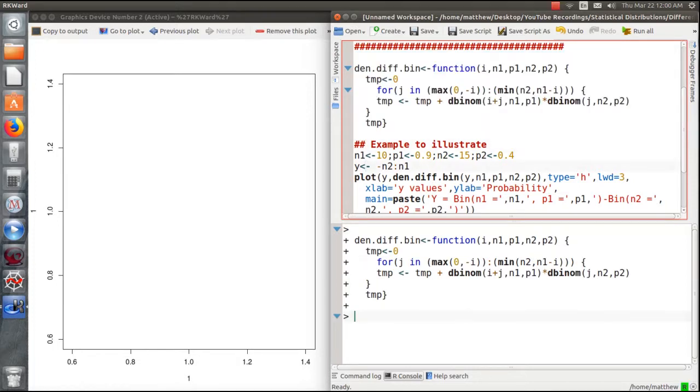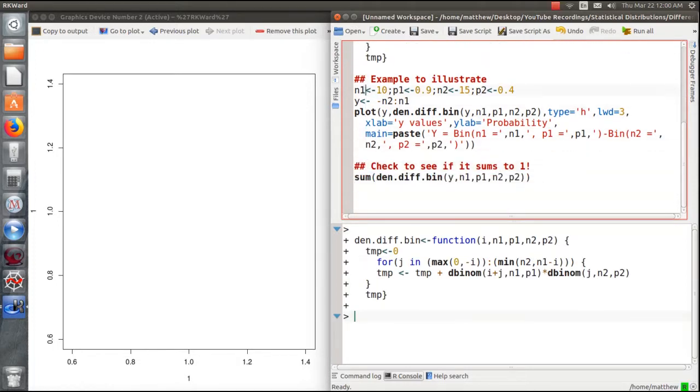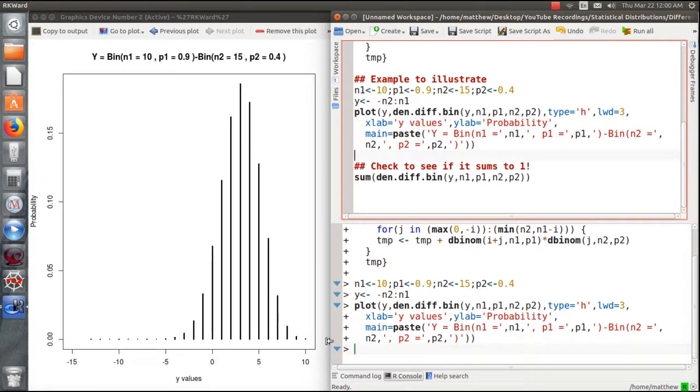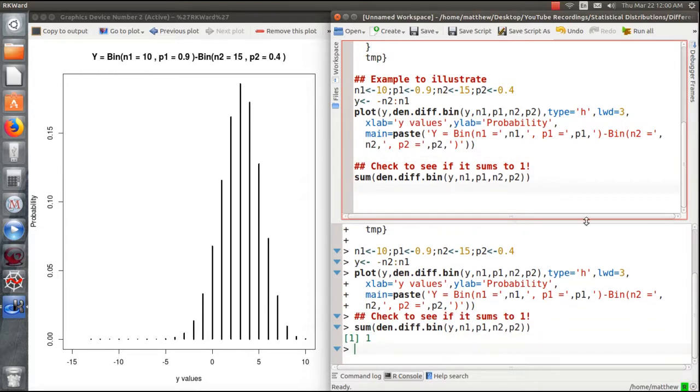And now let's look at some specific examples. We're going to look at several. Here we're going to let a sample size of 10 and 15. The proportion P1 and P2 is 0.9 and 0.4. And then we're going to plot it. And there, here's the density of Y of X1 minus X2. And let's check to see it sums to one. And it does. So if you take the height of each of these bars, they add to one.